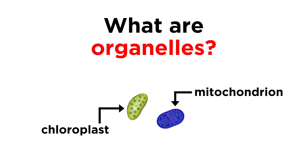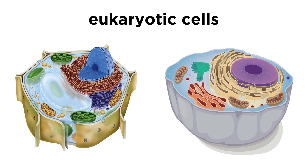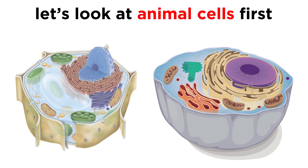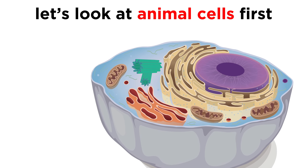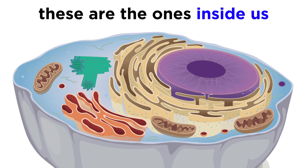These smaller bacteria grew more specialized over millions of years of evolution, and eventually became some of the organelles we find within a single eukaryotic cell. So what are these organelles exactly? To answer that, let's first make the distinction between plant cells and animal cells. These are both examples of eukaryotic cells, but they differ in the precise components within. Let's first take a look at animal cells, which are the kind inside you and me, since humans are considered part of the animal kingdom.